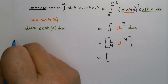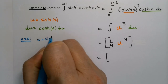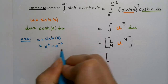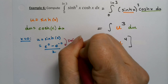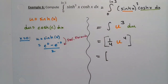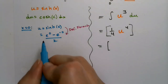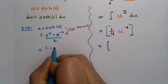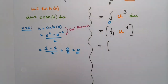Let's find the new limits. When x = 0, u = sinh(0) = (e⁰ − e⁻⁰) / 2 by the definition. e⁰ = 1 and e⁻⁰ = 1, so it's (1 − 1) / 2 = 0/2 = 0. The bottom limit stays 0.